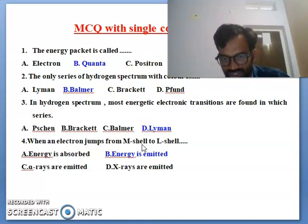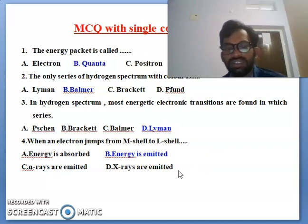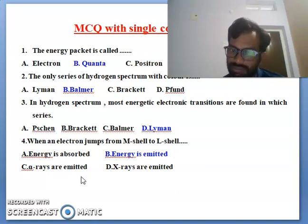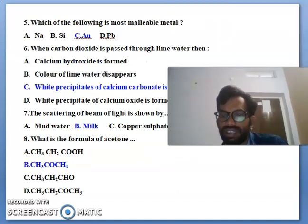So Lyman is the most electronic transitions are found in the hydrogen spectrum. Next one fourth one bit is when the electron jumps from M shell to L shell, energy is emitted and alpha rays are emitted and X-rays are emitted. So energy is emitted is the correct answer. When the electron jumps from M shell to L shell, energy is emitted.